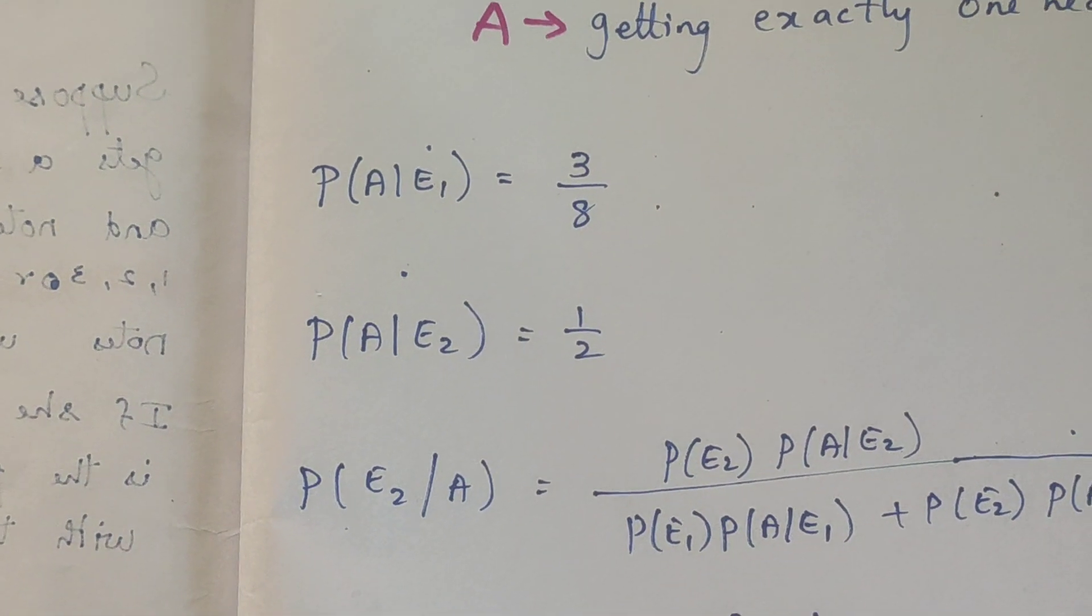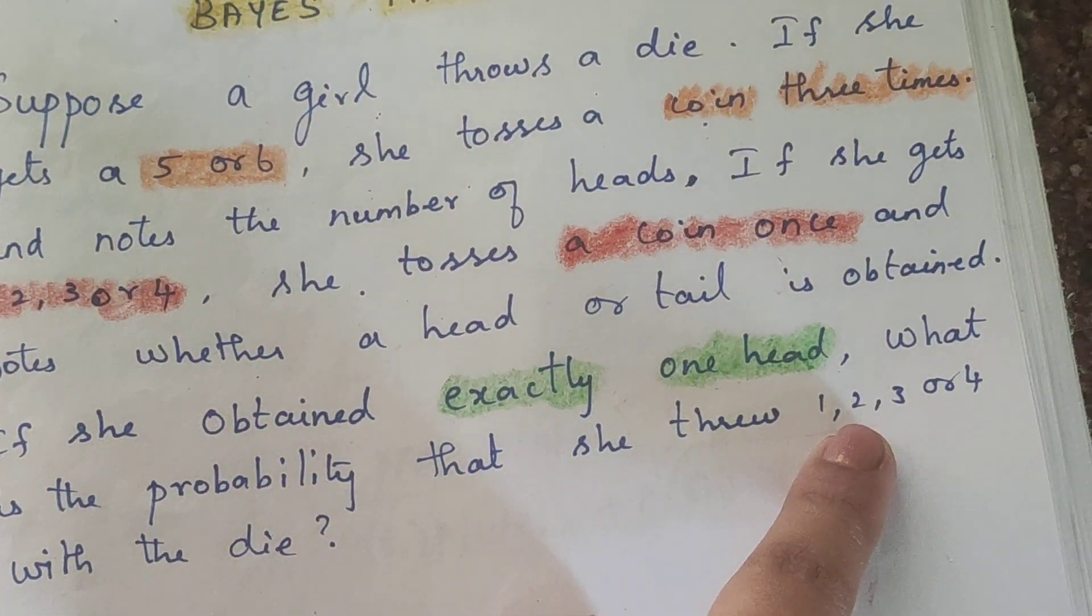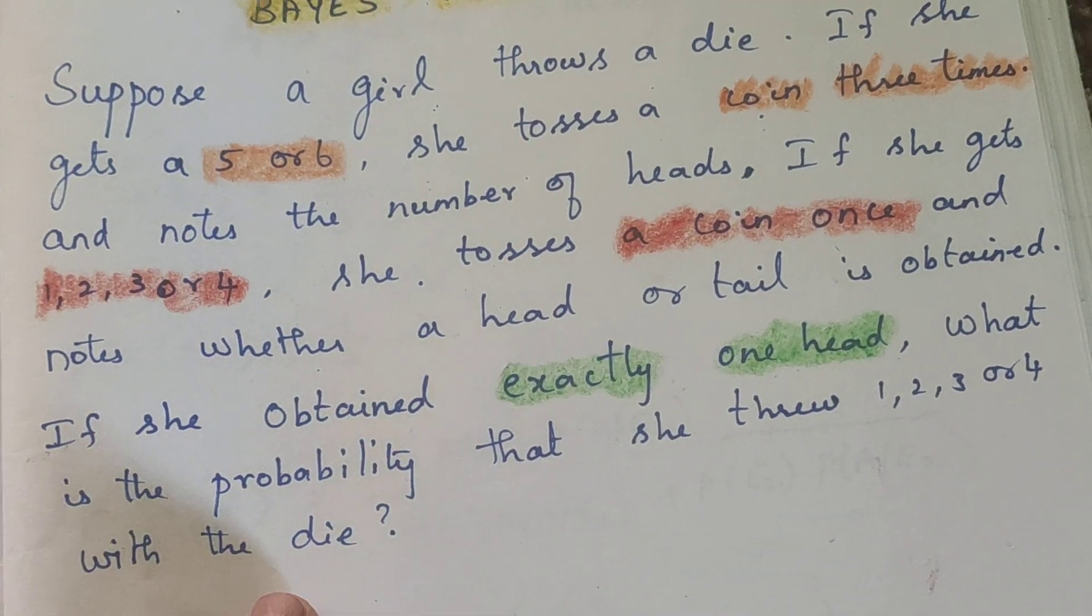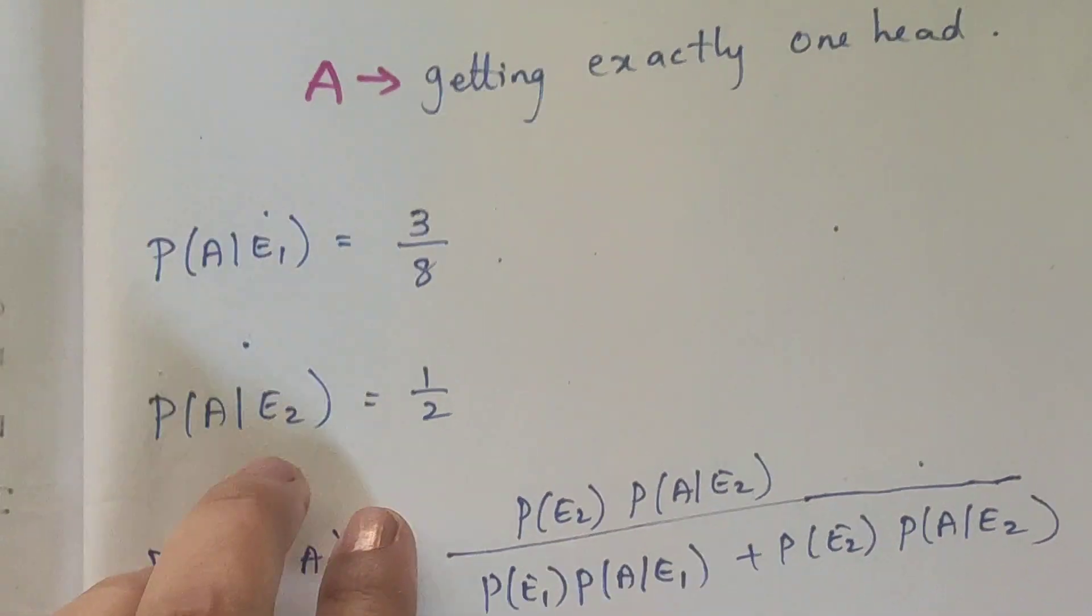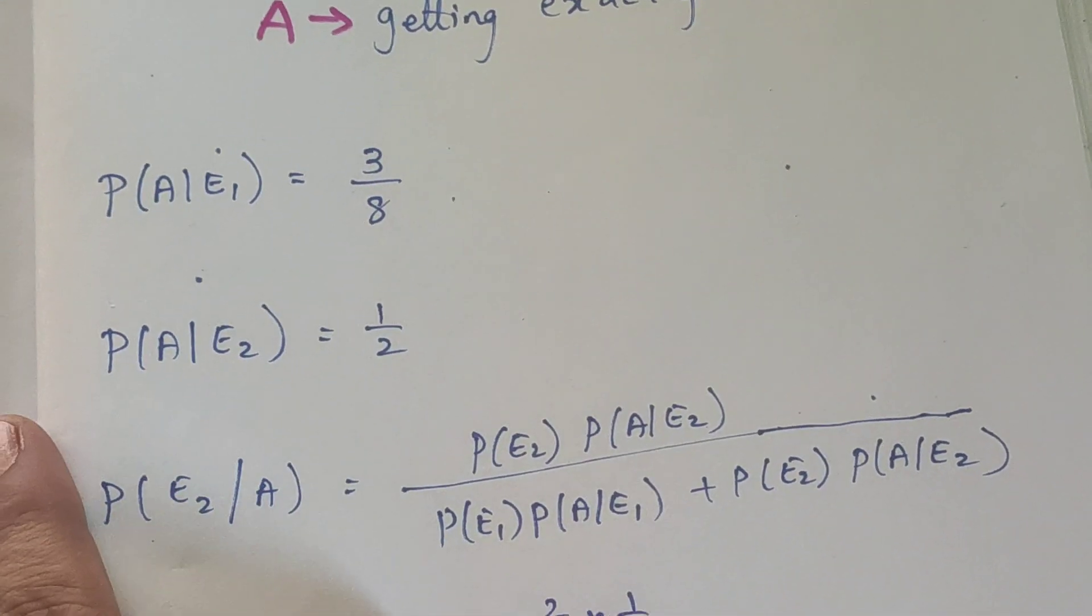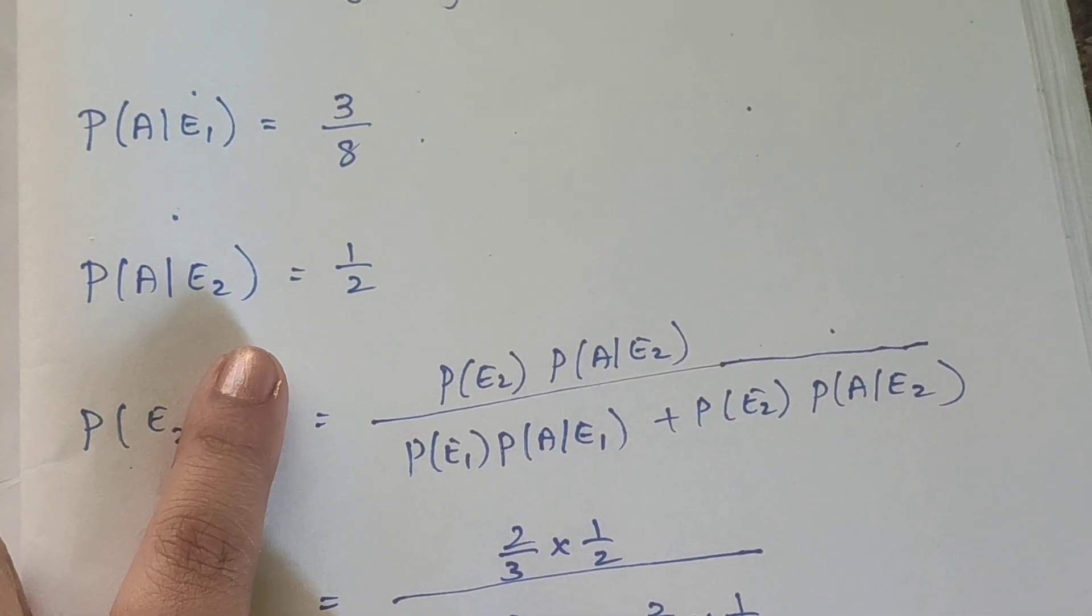The question asks for the probability of getting 1, 2, 3, or 4. So this is the probability that she throws 1, 2, 3, or 4 with the die. This is a reverse order problem.